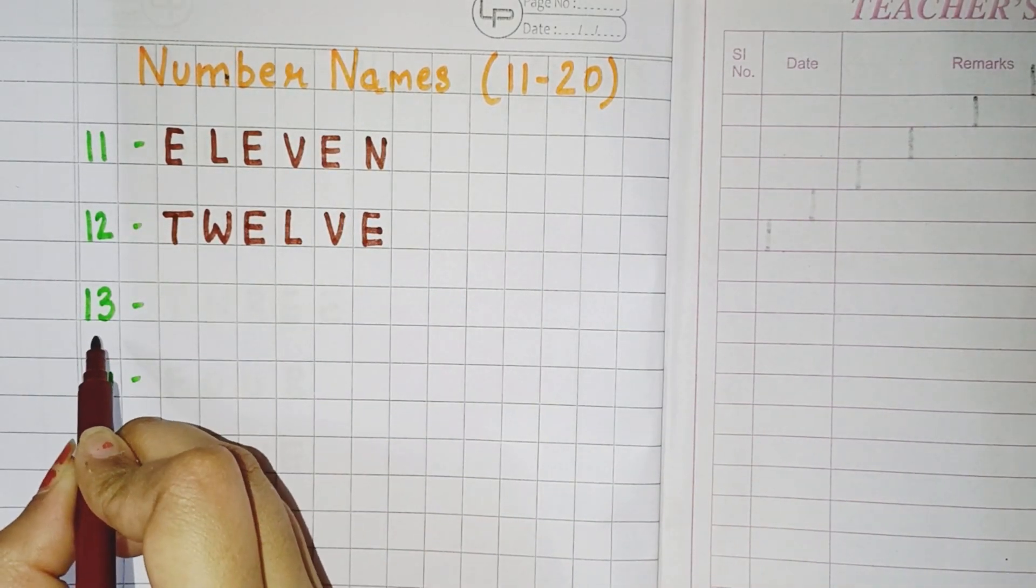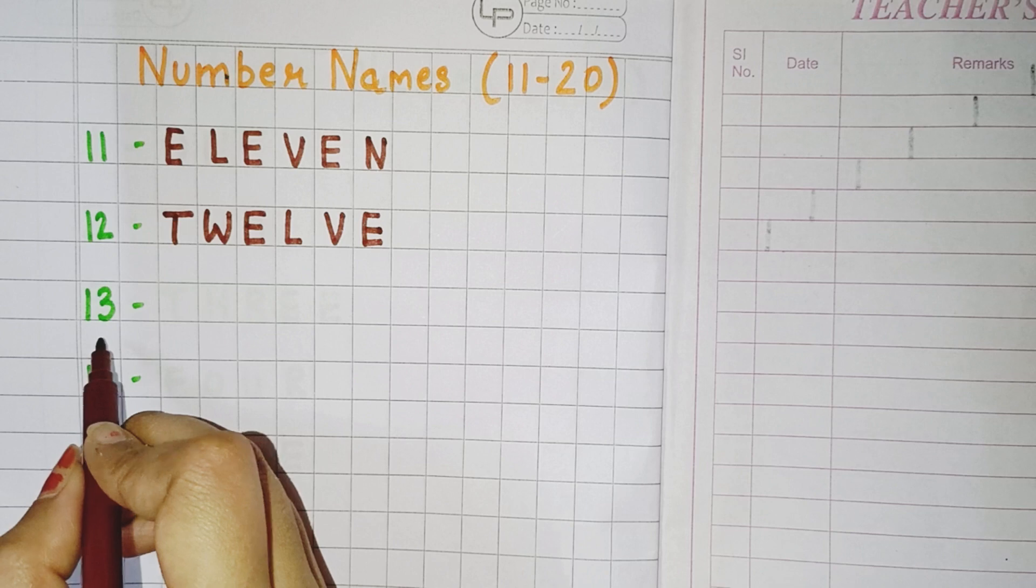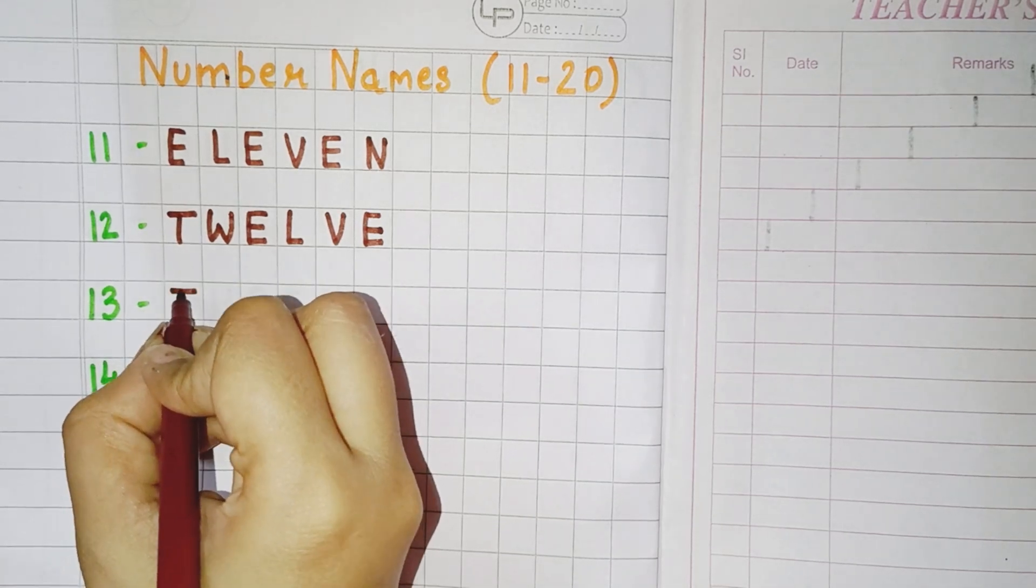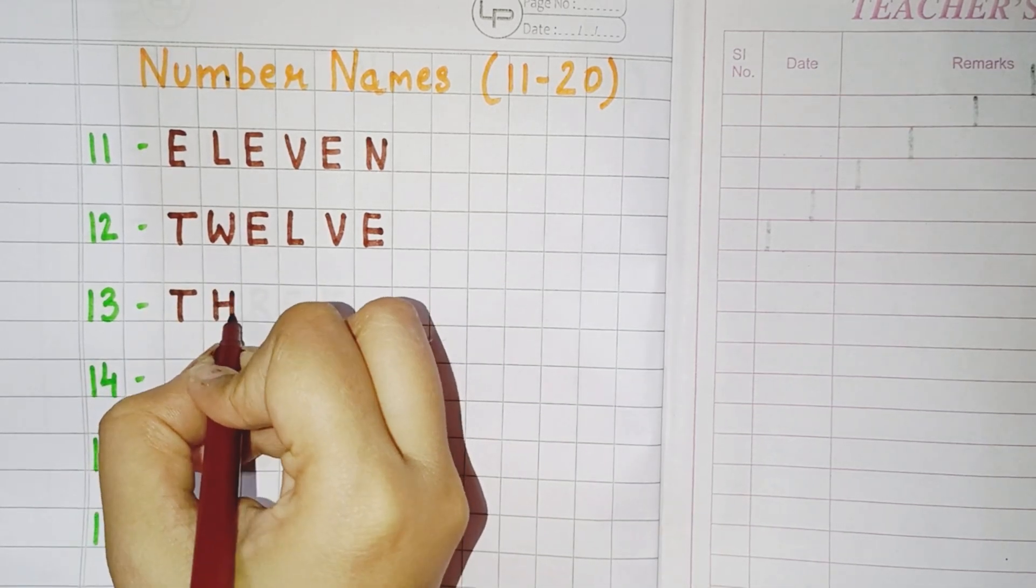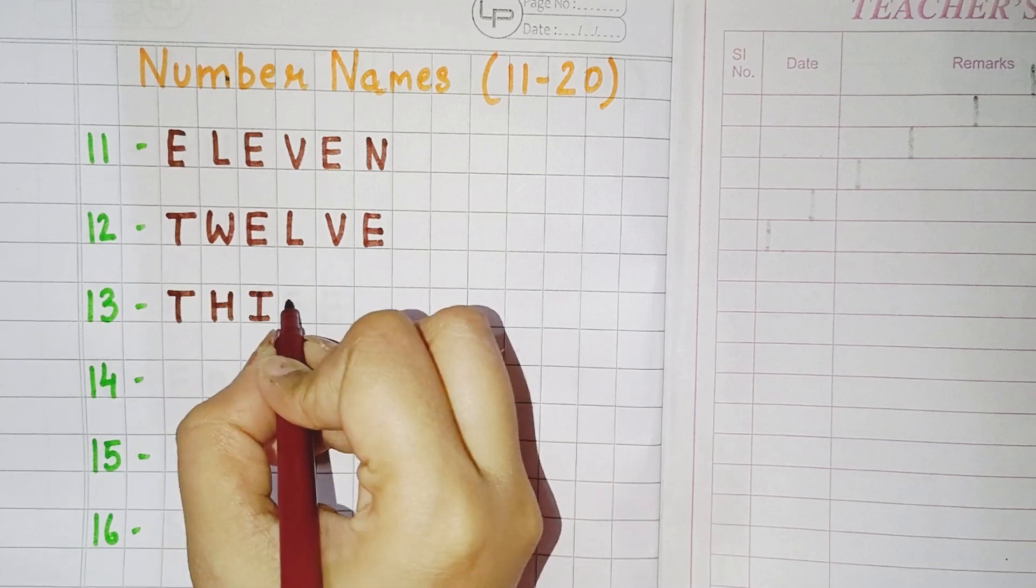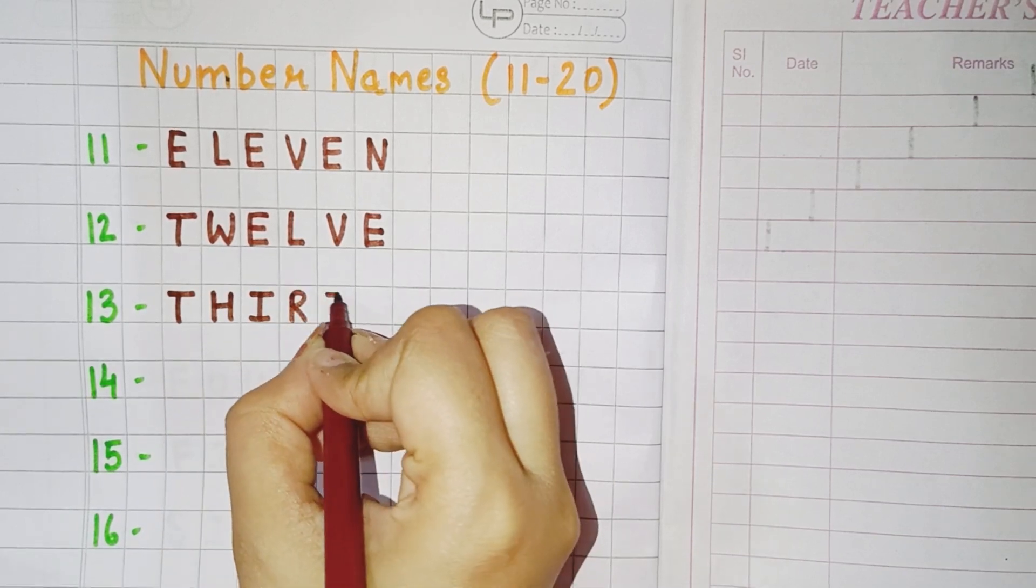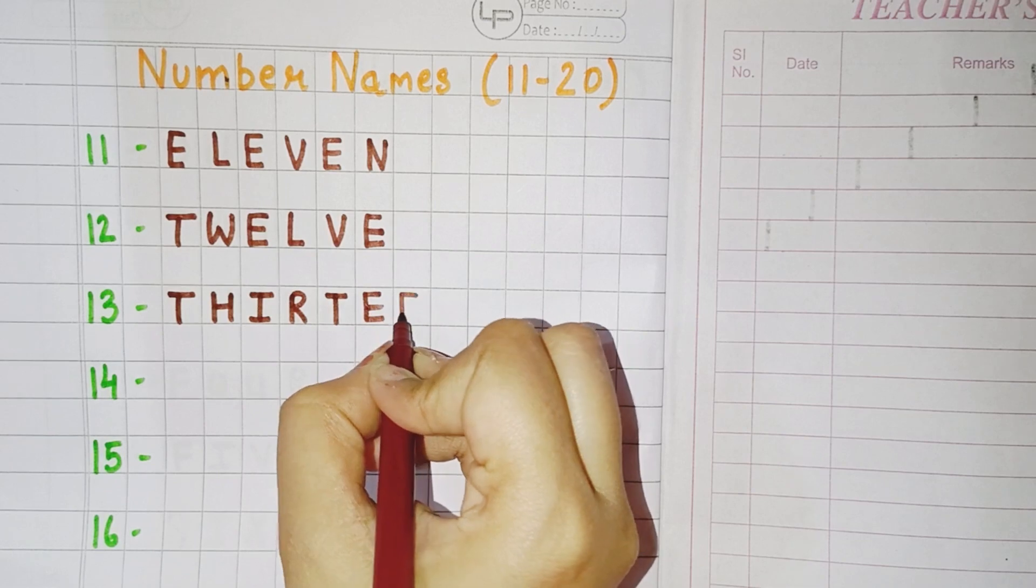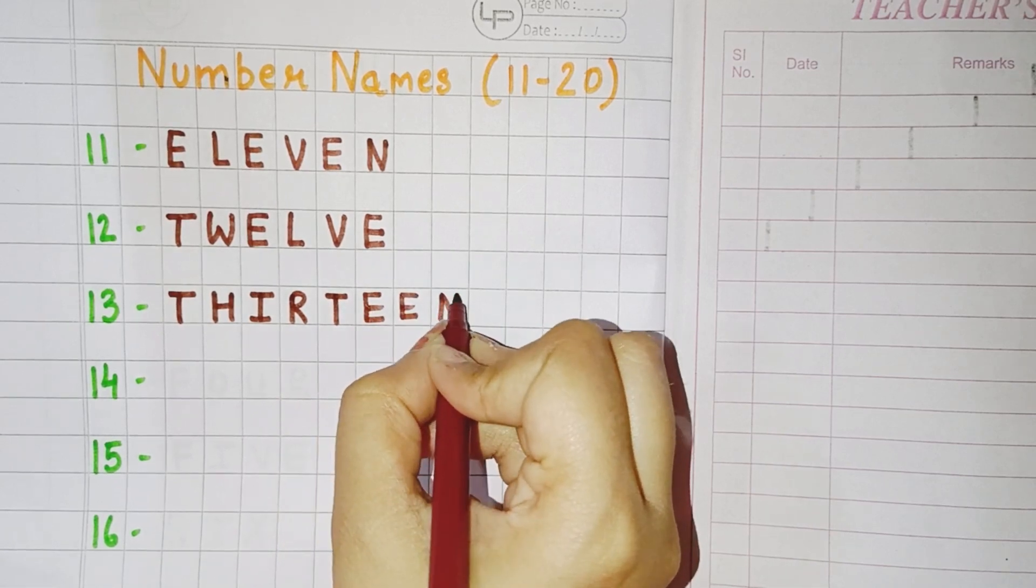Now the next number is 13. So what will be the spelling of 13? T, H, I, R, T, double E, N. Thirteen.